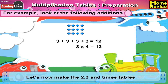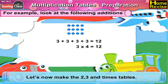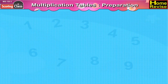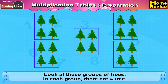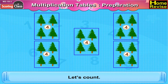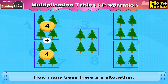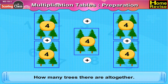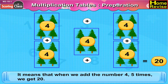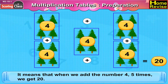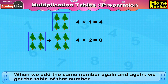Let us now take the 2, 3, and 4 times tables. Look at these groups of trees. In each group, there are 4 trees. Let us count how many trees there are altogether. That would be 4 plus 4 plus 4 plus 4 plus 4, that is 20. It means that when we add the number 4 five times, we get 20. When we add the same number again and again, we get the table of that number.